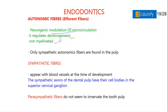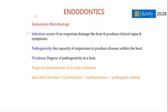Autonomic efferent fibers in the pulp are non-myelinated; only sympathetic autonomic fibers are found — parasympathetic fibers do not innervate the tooth pulp. These sympathetic fibers appear with blood vessels at the time of development. The sympathetic axons of the dental pulp have their cell bodies in the superior cervical ganglion.